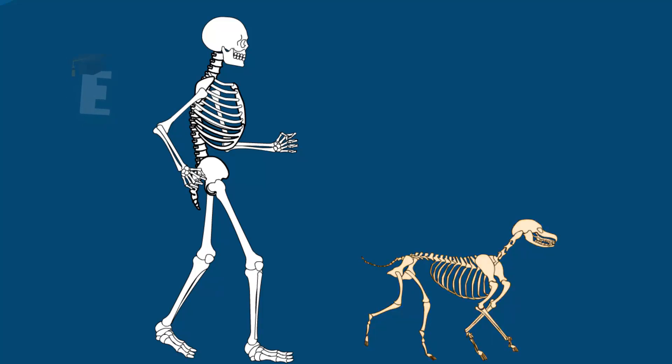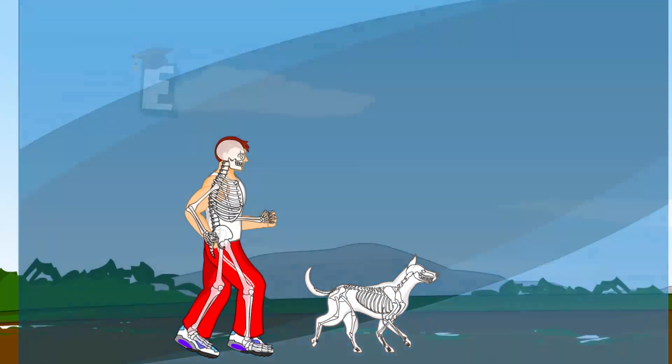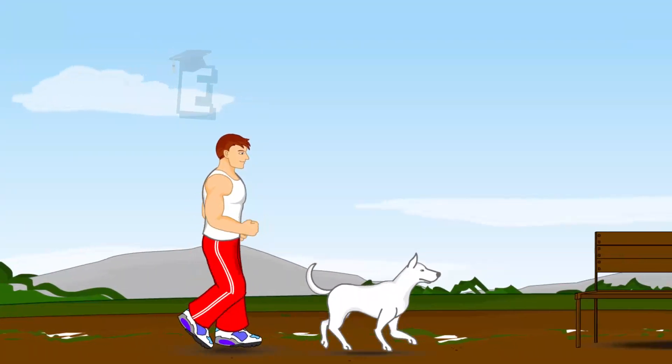The shapes of these skeletons are obviously different. The difference in their skeletons makes the shape of the human body different from the shape of a dog's body.